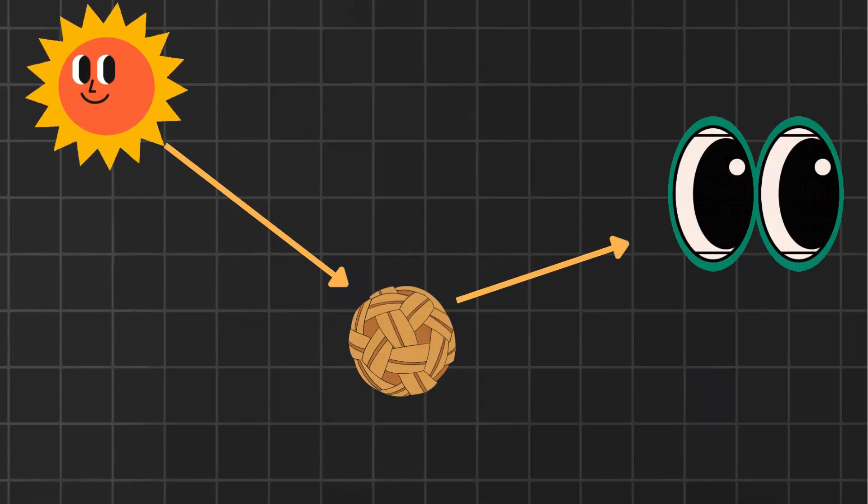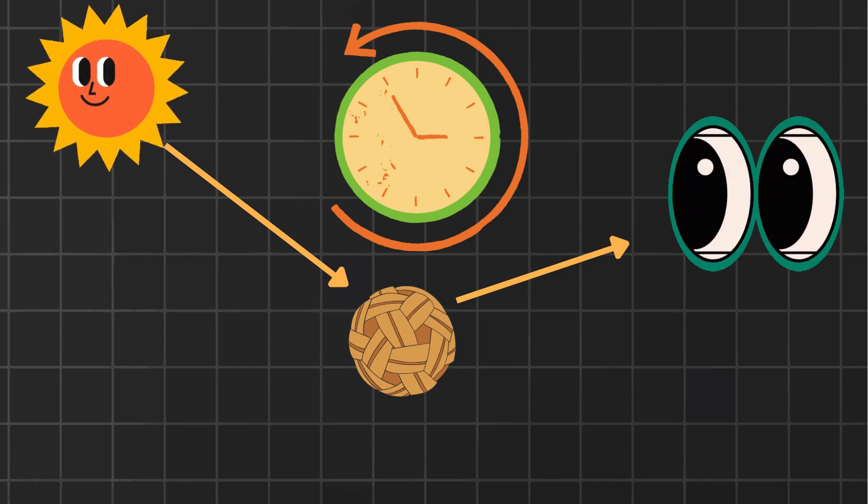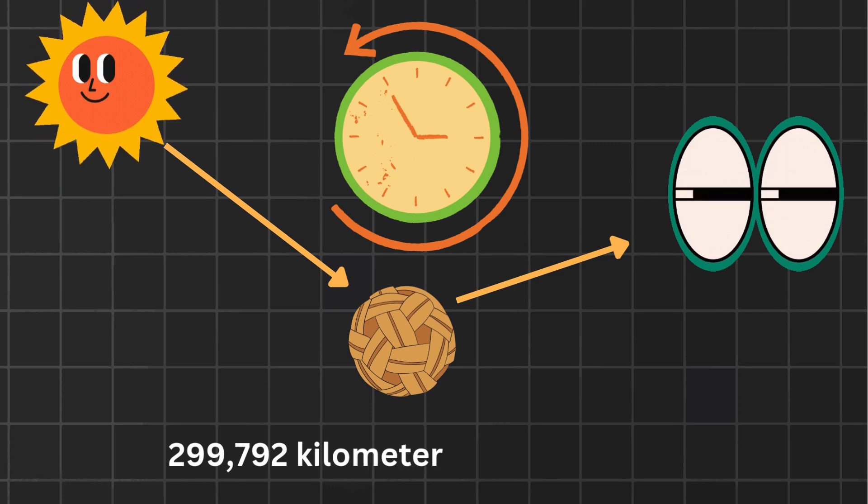Did you know that every time you look at the sun, you're seeing it in the past? That's because light, despite being the fastest thing in the universe, still takes time to travel.